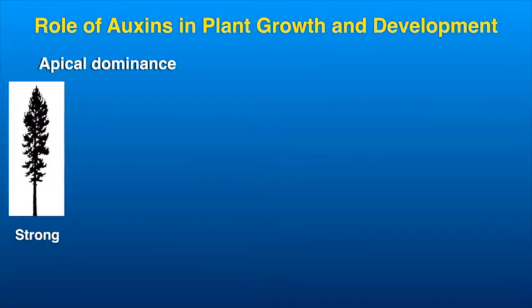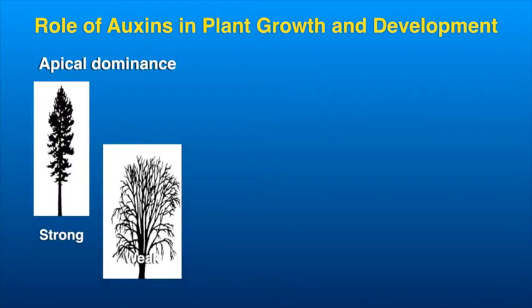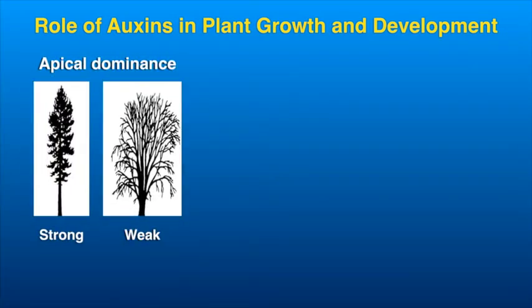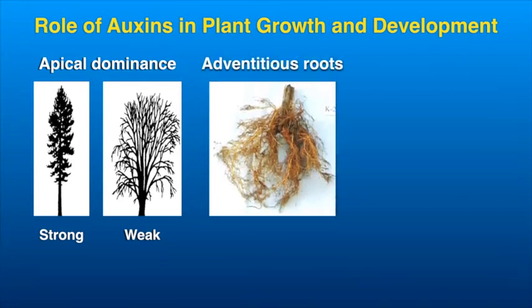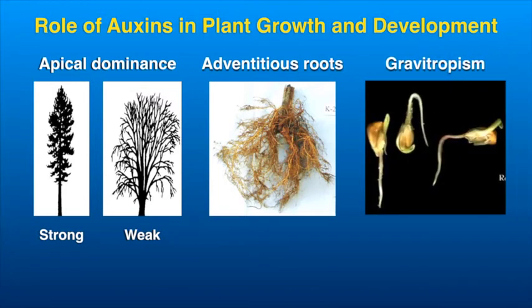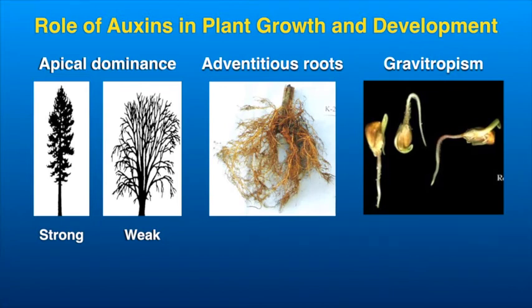Auxins are principally involved in plant growth and elongation. They promote apical dominance, where the apex or tip of a plant grows while the lateral buds don't develop. Auxins also induce adventitious rooting from shoot cuttings. They may increase the rate of cell elongation in response to directional stimuli and are thus important in tropic responses, e.g. gravitropism.